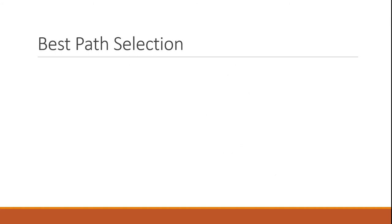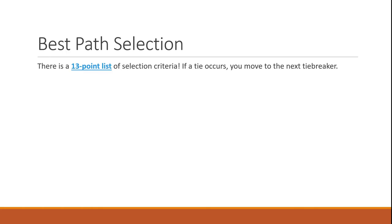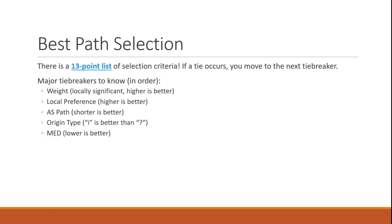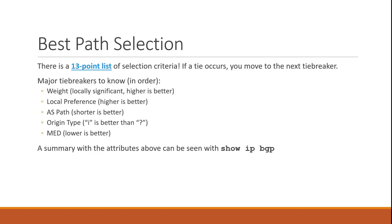Now let's talk about the actual best path selection process. You can find a detailed 13-point tiebreaker article on Cisco's website, linked in the video description — a great reference for detailed BGP scenarios, though it isn't going to be asked about on your CCNA. Typically, the full document lets you go down the list until you find a tiebreaker. For the most part, you only need to worry about the attributes we've discussed, plus weight. Weight isn't a BGP attribute — it's local to the router and Cisco-specific, acting just like local preference but not advertised to any neighbors. A great way to see these attributes briefly is with the show IP BGP command, optionally specifying a prefix or issuing it without one to see all prefixes.